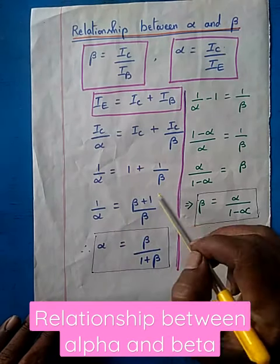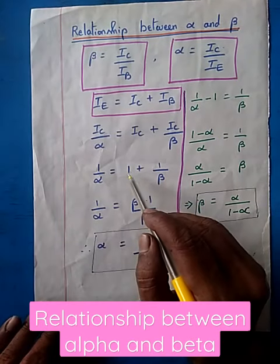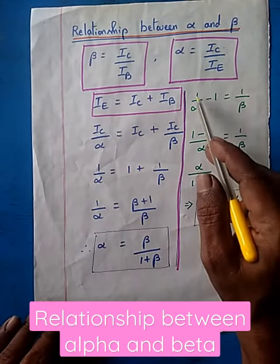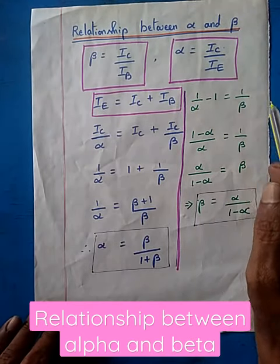From this relation, you will get this. That is, you move this one to this side. You will get 1 by alpha minus 1 equals 1 by beta.